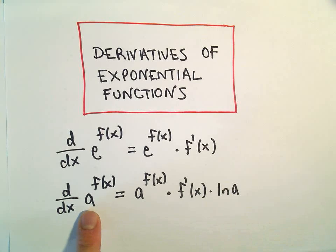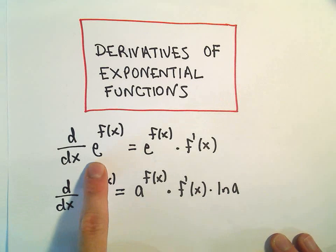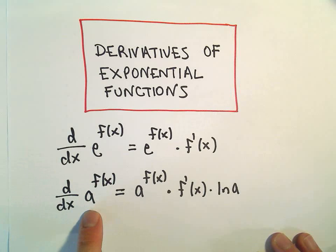If it's some other generic number other than e, remember e is just a number, so maybe it's 2, 3, 4, whatever it is. If we have a number to f of x,